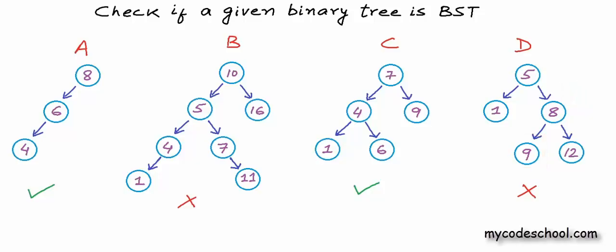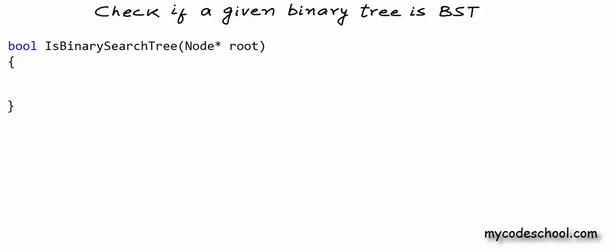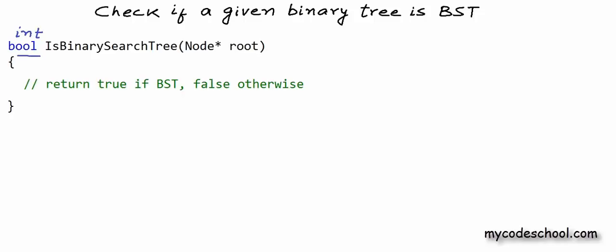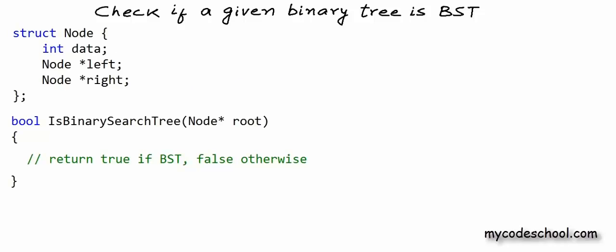So how should we go about solving this problem? I want to write a function that takes a pointer or reference to the root node of a binary tree as argument, and the function should return true if the binary tree is a BST, false otherwise. This is how the method signature will look in C++. In C, since there is no boolean type, the return type can be int — return 1 for true and 0 for false. The node structure has three fields: one to store data and two pointers to store addresses of left and right children.